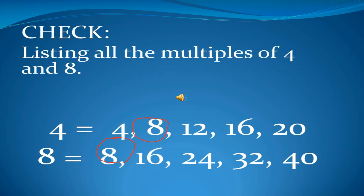The last step in solving the word problem is to Check. We are going to list all the multiples of 4 and 8. The multiples of 4 are: 4, 8, 12, 16, and 20. The multiples of 8 are: 8, 16, 24, 32, and 40. Then we are going to get the least common multiple or LCM. The common multiple is 8. This is the least common multiple of 4 and 8, and we get the correct answer.